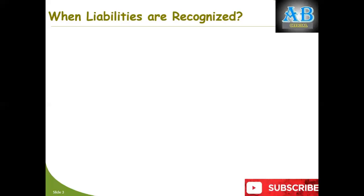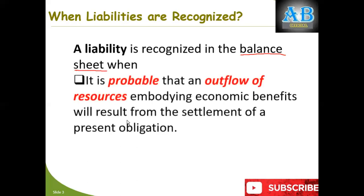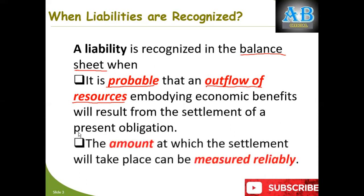When are liabilities recognized in our financial statements, in our balance sheet? Liabilities will be recognized in the balance sheet when it is probable that an outflow of resources will occur to settle that obligation. Probable means chances of occurrence are more than chances of non-occurrence. There is an outflow of resources — you will give up the resources to settle your obligation. The second condition is the amount for settlement must be measured reliably — you know how much you are supposed to pay. If both conditions are met, you recognize it as your liability.